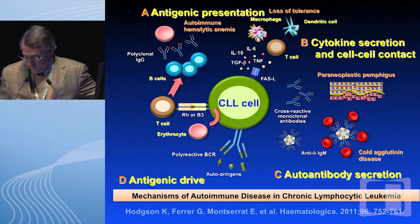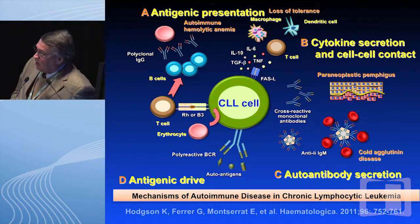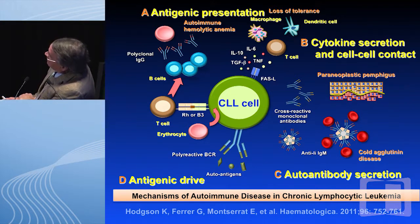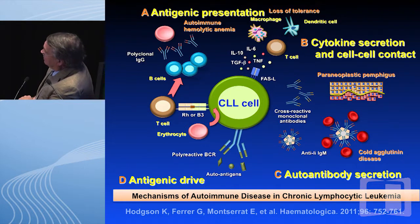In one slide, we'll take a few minutes — this really outlines the whole pathophysiology of what we're talking about today. This is the CLL cell. There can be issues of antigenic presentation, cytokine secretion and cell-cell contact, antigenic drive, and autoantibody secretion. In the first mechanism, the red cell may act as an antigen-presenting cell, leading to T cell reactivity where B cells interact, produce polyclonal immunoglobulins, and you get autoimmune hemolytic anemia or ITP.